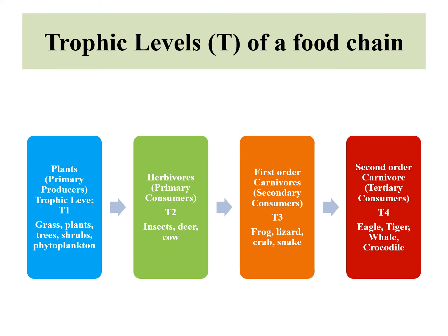The first trophic level in a food chain is always your producers, or green plants. The second is your herbivores, which are called the primary consumers. The secondary consumers are also called the first order carnivores — they are the small carnivores,